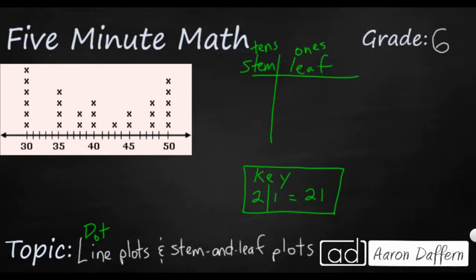So in this line plot, what we have to realize is that every time we see an x here, that's going to represent a time that that particular number is in our data set. So we have the number 30 appearing 1, 2, 3, 4, 5, 6 times.